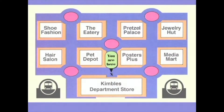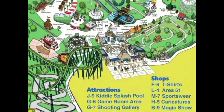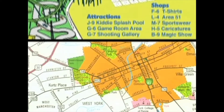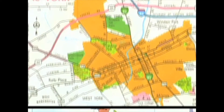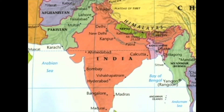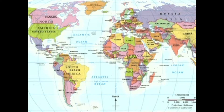A map is really nothing more than an illustration or drawing of a place, and there are maps of every type of place you can imagine. There are maps of malls that show you where to find different stores, maps of amusement parks that tell you where to find different rides or places to eat, maps of cities and towns that help you locate streets and parks, maps of entire countries that show where different cities and towns are located, and maps of the entire world that show where countries, continents, and oceans are located.